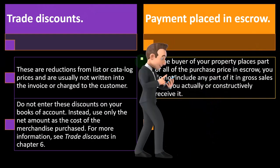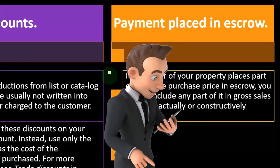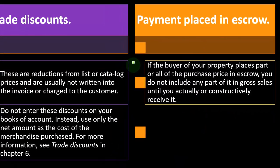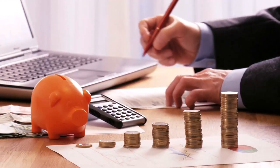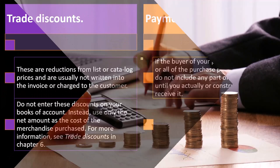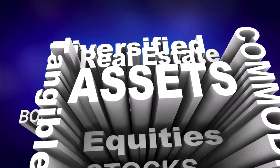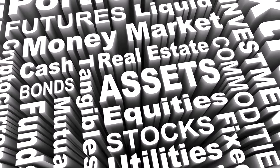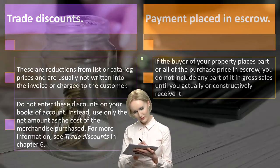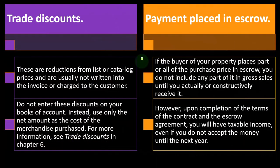Regarding payment placed in escrow: if the buyer of your property places part or all of the purchase price in escrow, you do not include any part of it in gross sales until you actually constructively receive it. Escrow is common in real estate but can apply to other transactions. It's an intermediary period where the deal is not completely finalized and a third party holds the assets, so you haven't really claimed them yet.